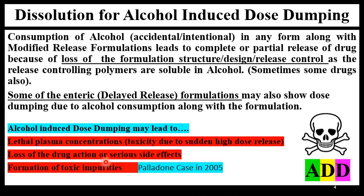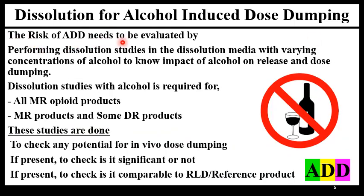Alcohol in the stomach or GIT may lead to formation of toxic impurities if the dose is taken before or after alcohol ingestion. The Palladone case in 2005 is a notable example — you can search it for more information. The risk of ADD needs to be evaluated by performing dissolution studies in media with varying concentrations of alcohol to understand the impact on release and dose dumping. It is essential to have dissolution data with alcohol in the media to check whether the product exhibits alcohol induced dose dumping and how it behaves under such conditions.